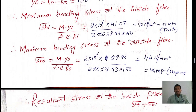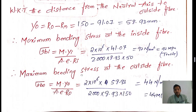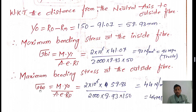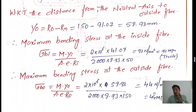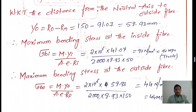Next, we find the maximum bending stress at the outside fiber. The formula is: σbo = M × yo / (A × e × Ro). Substituting: σbo = (2 × 10⁶ × 58.93) / (2000 × 8.93 × 150) = 44 N/mm² = 44 MPa. This stress is compressive in nature.